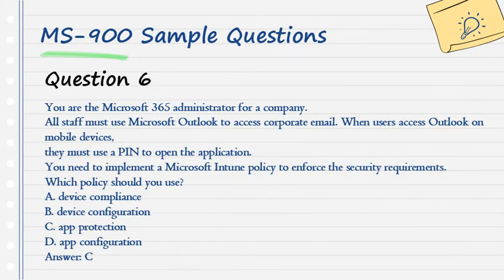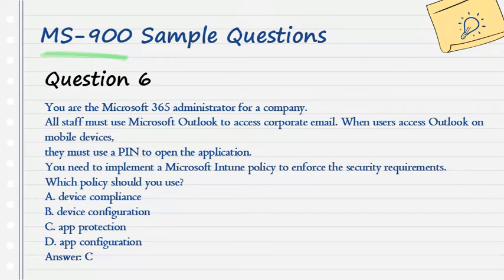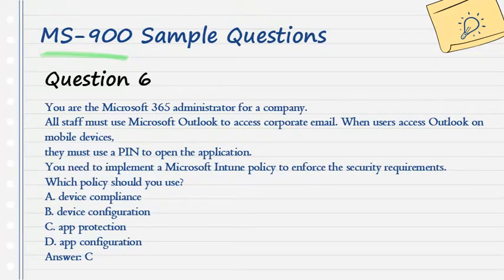Question 6. You are the Microsoft 365 administrator for a company. All staff must use Microsoft Outlook to access corporate email. When users access Outlook on mobile devices, they must use a PIN to open the application. You need to implement a Microsoft Intune policy to enforce the security requirements. Which policy should you use? A. Device Compliance. B. Device Configuration. C. App Protection. D. App Configuration. Answer: C.